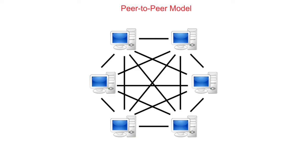Over the internet, a peer-to-peer setup can allow for files to be easily shared without the need for specialised hardware or a central server. A clear advantage here is if one node goes down on a peer-to-peer network, you will only lose the files on that part of the network. The rest can continue to operate perfectly fine.